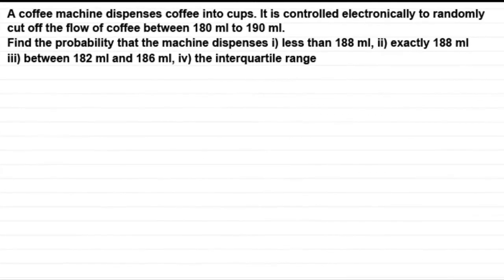Welcome to this, my second video in the series on the continuous uniform distribution, or continuous rectangular distribution as some people call it. I've got an example here which involves working out the probability density function for the distribution, along with some probabilities and the interquartile range. A coffee machine dispenses coffee into cups and it's controlled electronically to randomly cut off the flow of coffee between 180 millilitres and 190 millilitres.